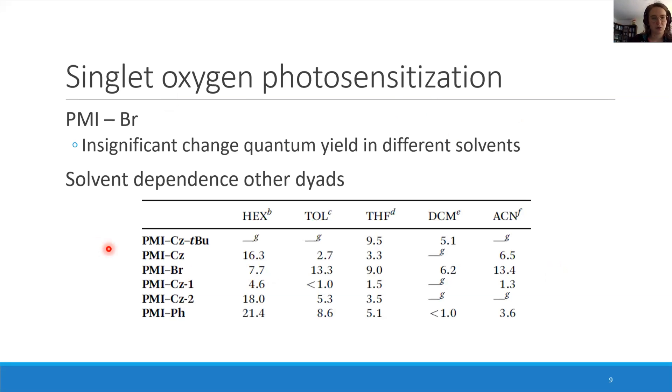But for the other solvents, the change in the quantum yields are very large, differ a lot. Therefore, the mechanism is proposed to be via the spin-orbit charge transfer intersystem crossing, which is also known to be polar solvent dependent.